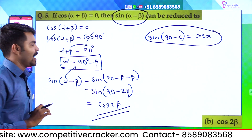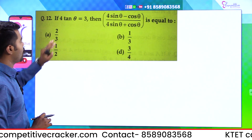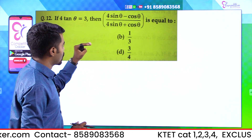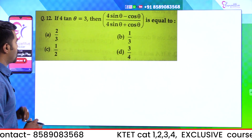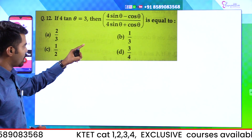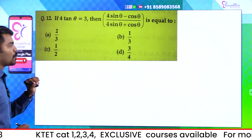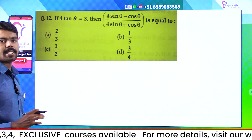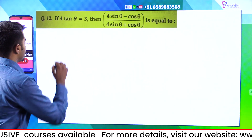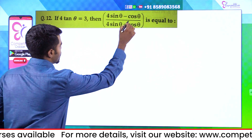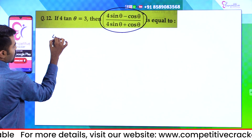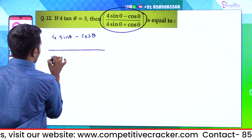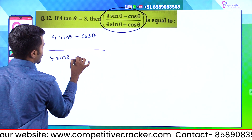If 4 tan θ = 3, then (4 sin θ − cos θ)/(4 sin θ + cos θ) equals: Option A, 2/3; Option B, 1/3; Option C, 1/2; Option D, 3/4. We will use this trigonometry approach — given 4 tan θ = 3, we evaluate the expression.